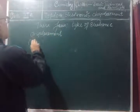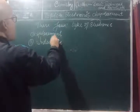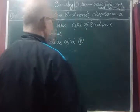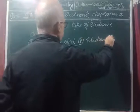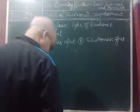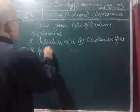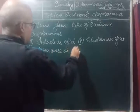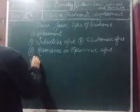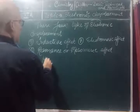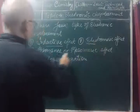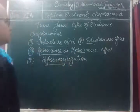The first type is the inductive effect. The second one is the electromeric effect. The third one is the resonance, also called the mesomeric effect. And the last one is hyperconjugation. We will see them one by one: inductive effect, electromeric effect, resonance/mesomeric effect, and hyperconjugation.